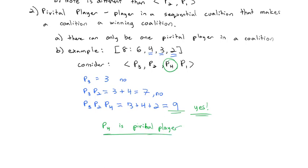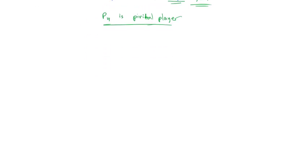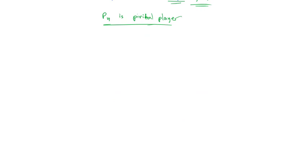So player four is the pivotal player. Once player four joined the coalition, it became a winning coalition. We don't care whether player one joined later or at all — it doesn't matter. Being the pivotal player means you have a lot of power in the weighted voting system, and that's what we're going to measure using what's called the Shapley-Shubik Power Index.